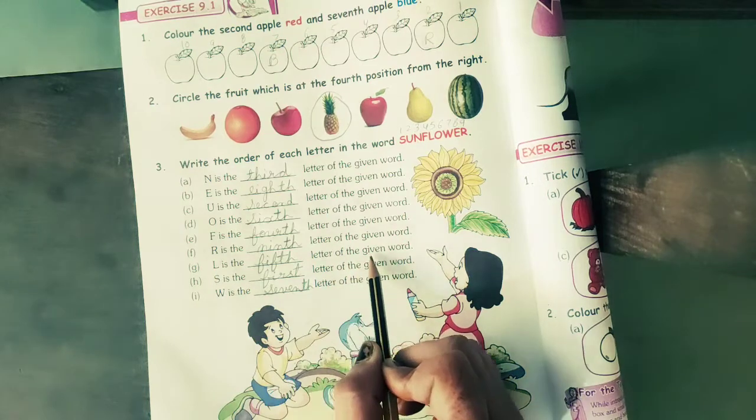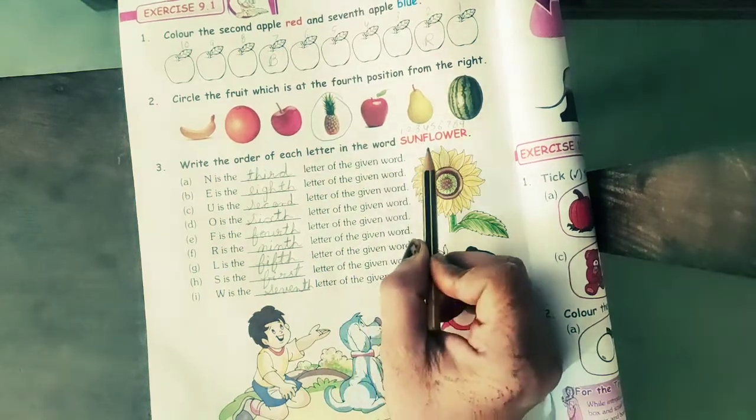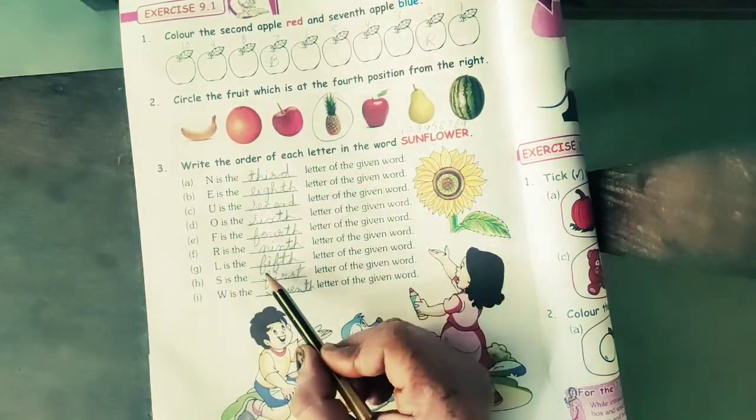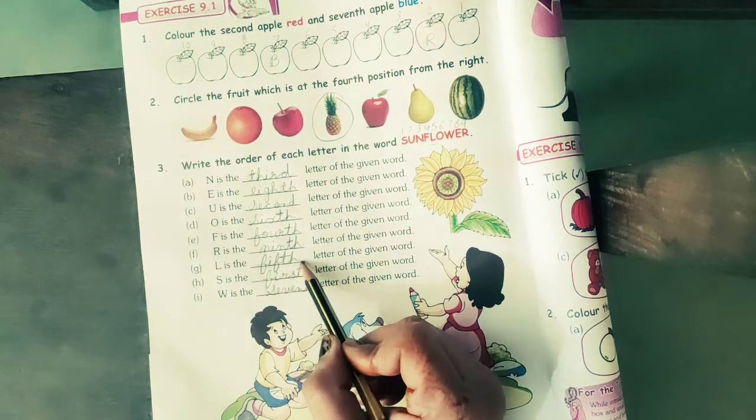L is the letter of the given word. L is at which number position? Fifth. The spelling of fifth: F, I, F, T, H, fifth.